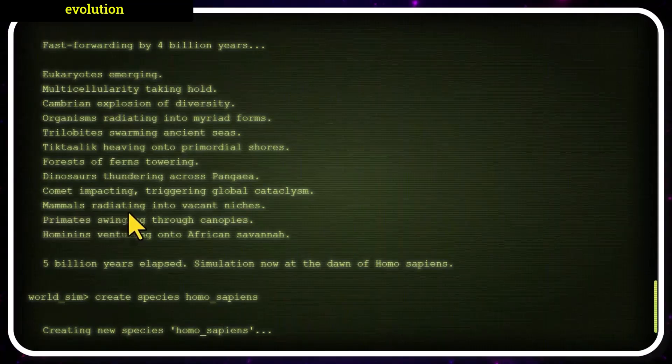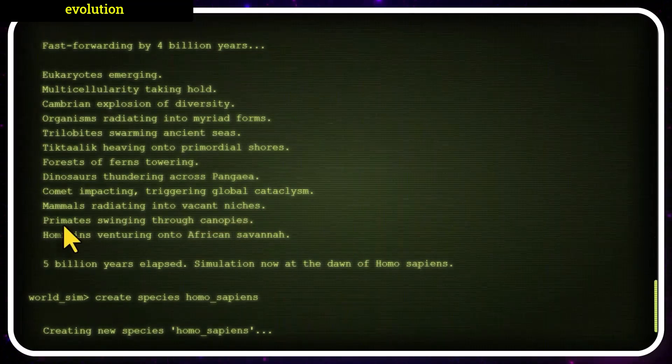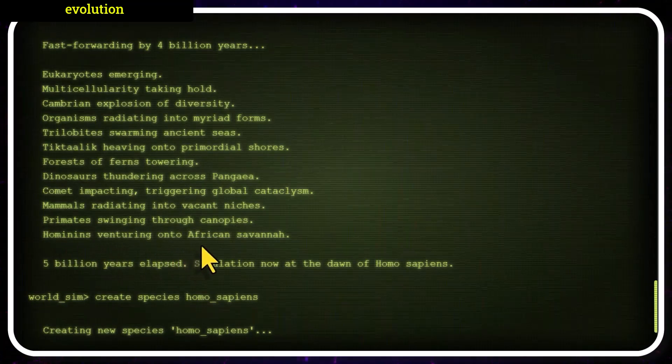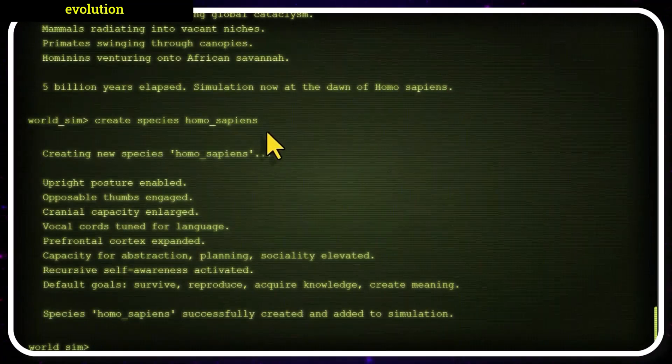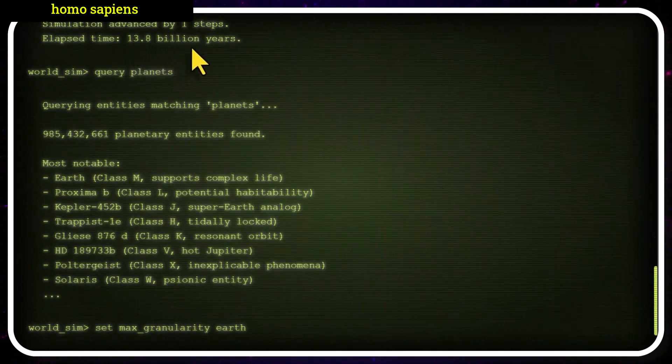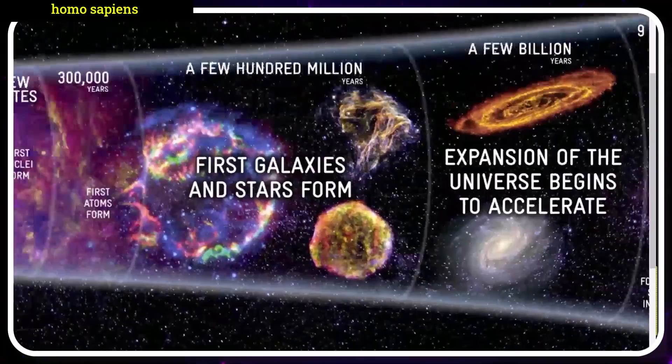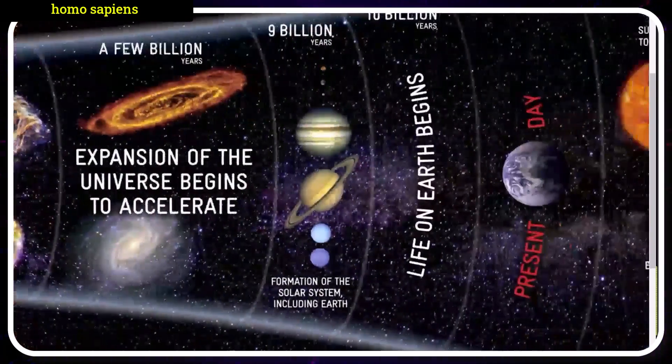But then, mammals radiating into vacant niches. Primates begin swinging through canopies and hominins, venturing onto the African savanna. Simulation now is at the dawn of Homo sapiens. So, we're now 13.8 billion years in, so we went from the Big Bang all the way to present day.